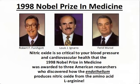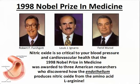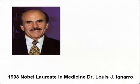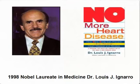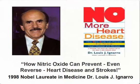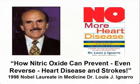This is so critical to cardiovascular health that the 1998 Nobel Prize in Medicine was awarded to three American researchers who discovered how your endothelium converts the amino acid L-arginine into nitric oxide — the master signaling molecule of your entire cardiovascular system. One of these Nobel laureates is Dr. Louis J. Ignaro. He wrote a national bestseller called No More Heart Disease. The subtitle says: how nitric oxide can prevent, even reverse, heart disease and strokes.